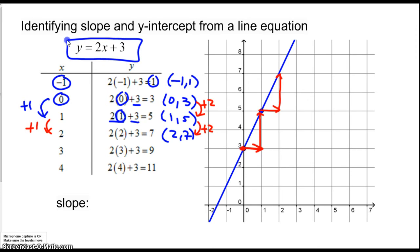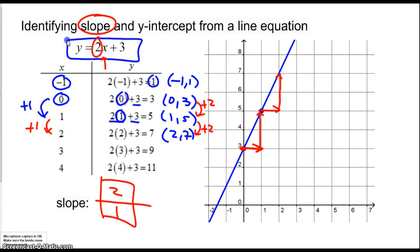That difference is the slope, because slope is change in y over change in x. For every change in x of 1, y goes up by 2, meaning slope is 2 over 1. The reason for this is that the 2 is multiplying the x, so every time x goes up by 1, I'm adding that 2 over and over. That's why the number multiplying x is the slope.